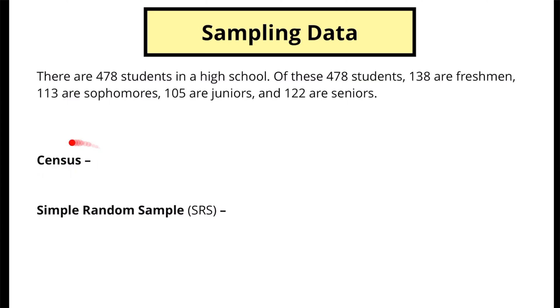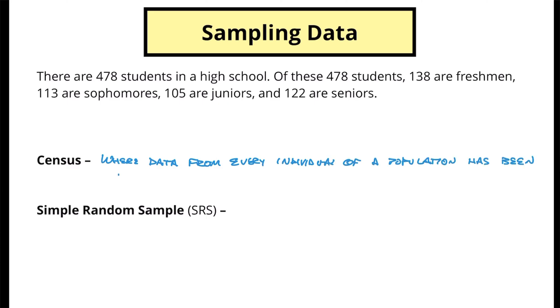The first method is a census. A census is where data from every individual of a population has been taken into consideration. An example of this might be the seniors looking to organize their senior sweatshirt. They want to make sure that everyone has a say in which sweatshirt to get, so all 122 people need to respond to a survey. That would be a census for the senior class.